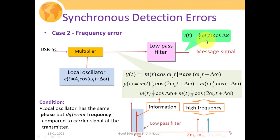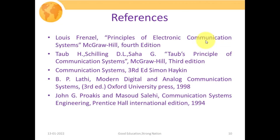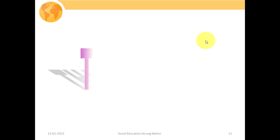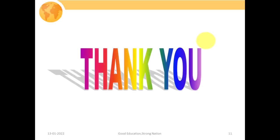Hopefully you have got the insight into how with the help of the synchronous detection method we can detect our DSBSC signal, and the different types of errors that exist in DSBSC signal demodulation. In case of any doubt, you can ask in the comment section and I'll try to solve them as soon as possible. Thank you very much for your patient hearing.